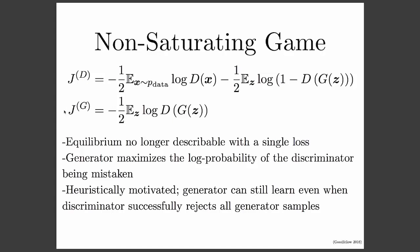I've described everything in terms of the minimax game, but I personally recommend using a slightly different formulation where the generator has its own separate cost. Rather than minimizing the discriminator's payoff, the generator should maximize the probability that the discriminator makes a mistake. The nice thing about this formulation is that the generator is much less likely to suffer from the vanishing gradient problem. But this is more of a practical tip and trick rather than a strong theoretical recommendation, and some of the other speakers today might give other advice. So it's kind of an open question about exactly which tips and tricks work the best.